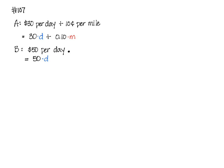You have two different plans for renting a car, and the first one is the cost of the car rental will be $30 a day and 10 cents for every mile that you drive. That can be seen in this equation here, 30 times the number of days plus 10 cents times the number of miles.